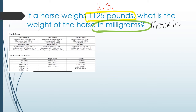I have my conversion chart up here. The first thing I need to do is go from the US system to the metric system, and then once I'm in the metric system, I need to drill down to milligrams. I can use two conversion factors — I just need one: either 2.20 pounds equals 1 kilogram, or 1 pound equals 0.45 kilograms. I'm going to use the top one where 1 kilogram is equivalent to about 2.20 pounds.